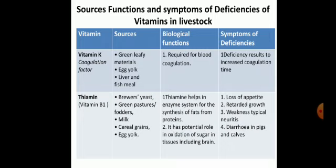Thiamine or vitamin B1 sources include brewer's yeast, green pasture, fodders, milk, cereal grains, and egg yolks. Its functions include helping in the enzyme systems for synthesis of fats and proteins, and it has a potential role in oxidation of sugars in tissues including the brain. Deficiency symptoms include loss of appetite, retarded growth, weakness, typical neuritis, and diarrhea in pigs and calves.